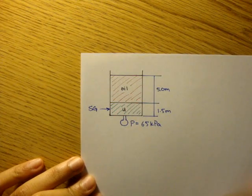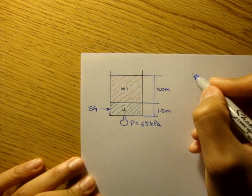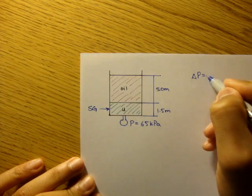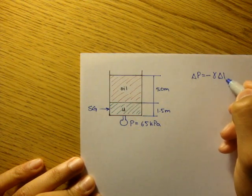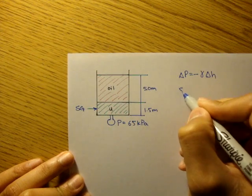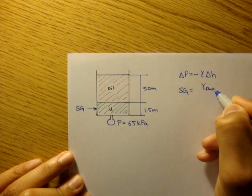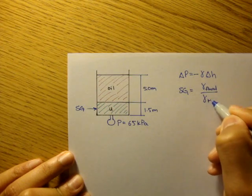Our equations are: delta P equals negative gamma delta H, and we also know specific gravity equals the gamma of the fluid we're studying over the gamma of H2O.